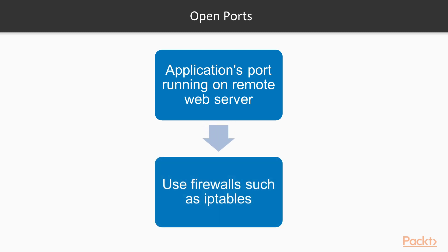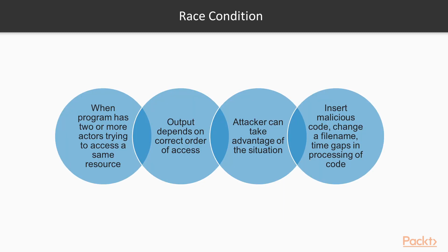A common error is to provide world access to application ports running on remote web servers instead of limiting access by specific IP addresses or security groups using firewalls such as IP tables. Next is race condition — a race condition exists when a program has two or more actors trying to access a certain resource but the output depends on the correct order of access, which cannot be ensured. Attackers can take advantage of this to insert malicious code, change a file name, or exploit small time gaps in processing to interfere with the sequence of operations.